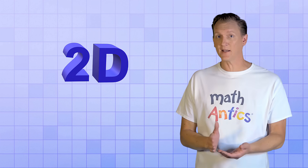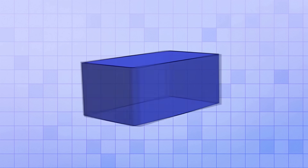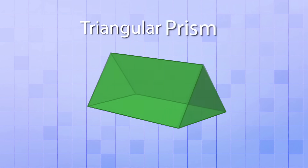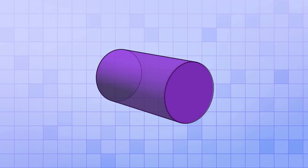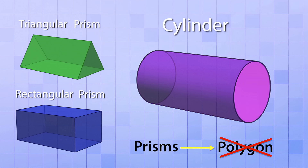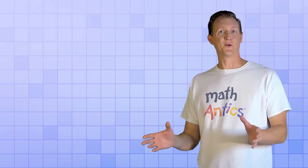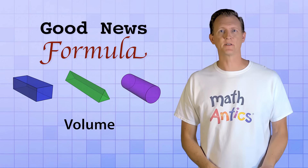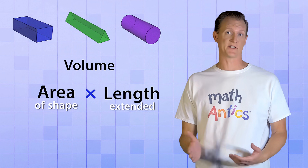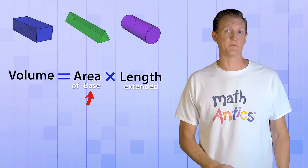A lot of 3D shapes can be formed by taking a 2D shape and extending it along the third dimension. For example, extending a rectangle gives a rectangular prism, extending a triangle gives a triangular prism, and extending a circle gives a cylinder. Technically, prisms are formed by extending a polygon, and since a circle is not a polygon, the resulting shape is called a cylinder, not a circular prism. The good news is there's a general formula: find the area of the original 2D shape — called the base — and multiply that by the length or distance it was extended.